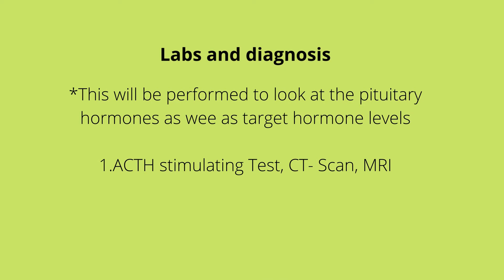With labs and diagnosis, we will look at the pituitary hormones that are being affected and check their levels. For example, the LH and FSH levels — we'll check if they are within the recommended levels. Some of the diagnostic tests will be the ACTH stimulating test. We could also do a CT scan or an MRI to check the pituitary gland and see if there's anything we can identify, like a tumor or an abnormality.